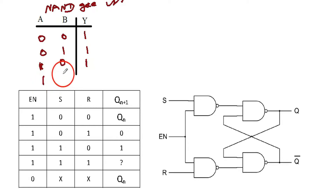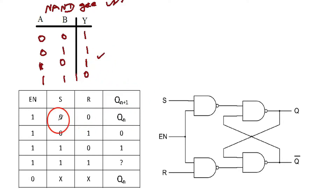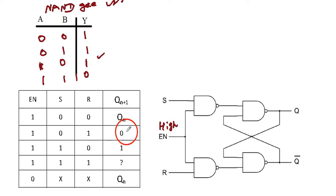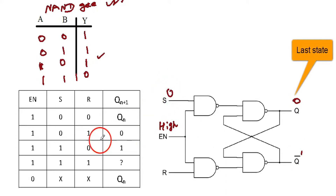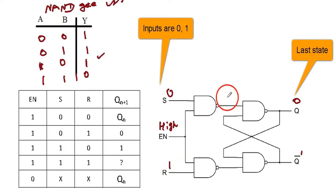The NAND gate gives 0 only for 1,1 input and all others give 1. This is the truth table for the SR flip-flop — SR latch using NAND gates only. Let the previous state be assumed as 0 and 1, and the inputs are S=0 and R=1.